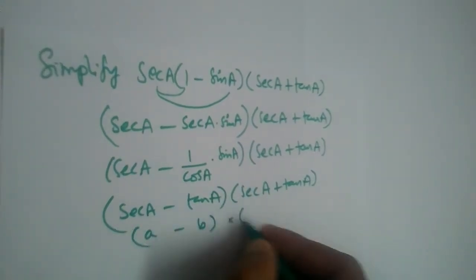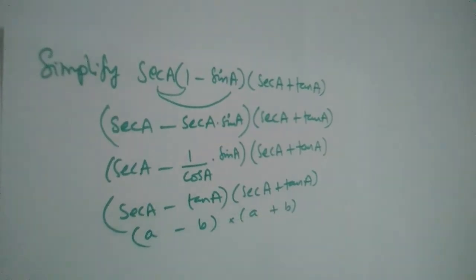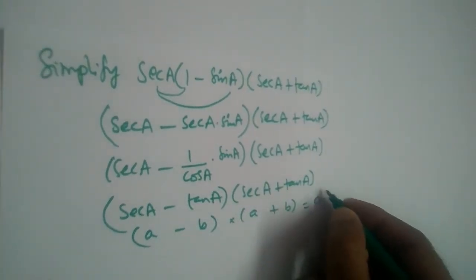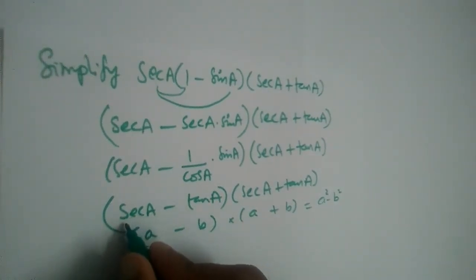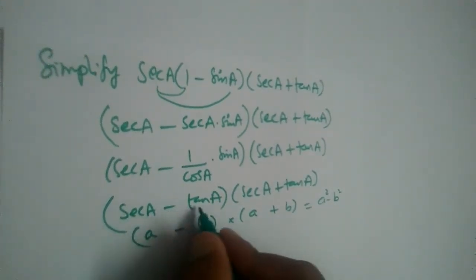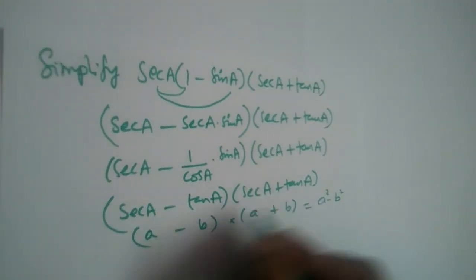It is A minus B multiplied by A plus B. A minus B, A plus B will become A square minus B square. Hence this secant A minus tan A into secant A plus tan A will become secant square A minus tan square A.